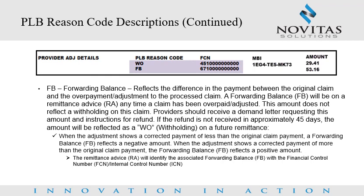Examples of remittance advice remark codes. FB, or forwarding balance, reflects the difference in the payment between the original claim and the overpayment adjustment to the processed claim. A forwarding balance will be on a remittance advice any time a claimant has been overpaid or adjusted. This amount does not reflect a withholding on this claim. Providers should receive a demand letter requesting this amount and instructions for refund. If the refund is not received in approximately 45 days, the amount will be reflected as a WO or withholding on a future remittance. When the adjustment shows a corrected payment of less than the original claim payment amount, a forwarding balance reflects a negative amount. When the adjustment shows a corrected payment of more than the original claim payment, the forwarding balance reflects a positive amount. The remittance advice will identify the associated forwarding balance with the financial control number, or FCN, from the associated demand letter and/or the internal control number, or ICN.